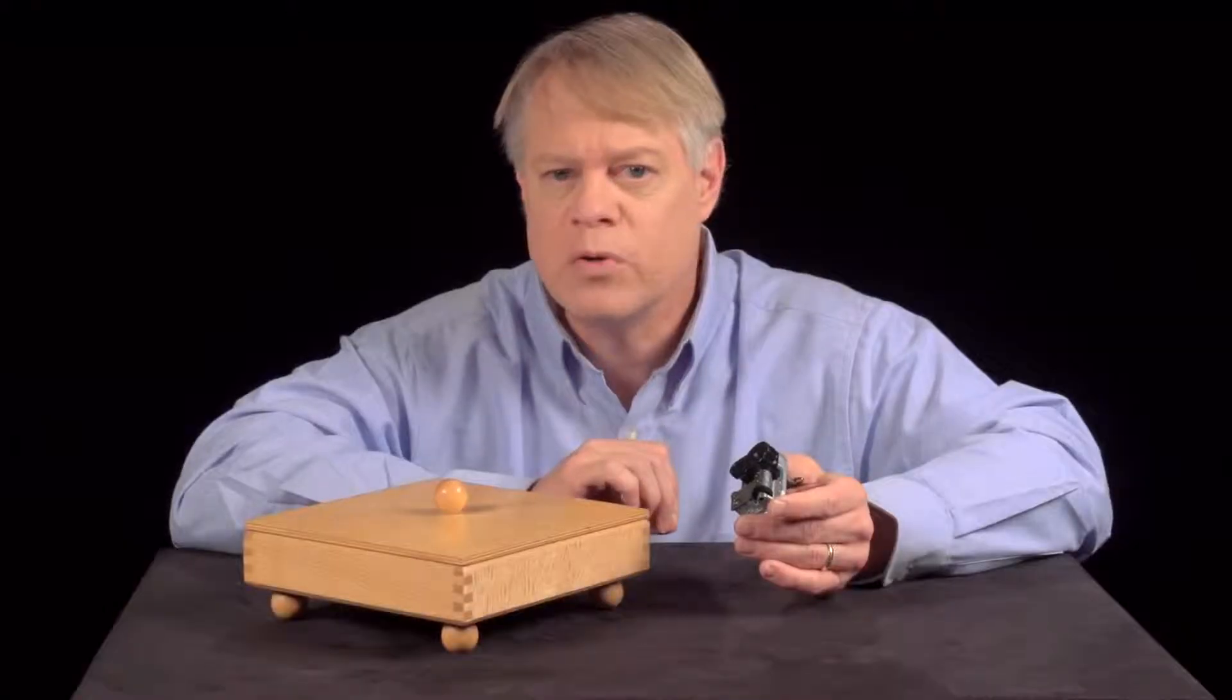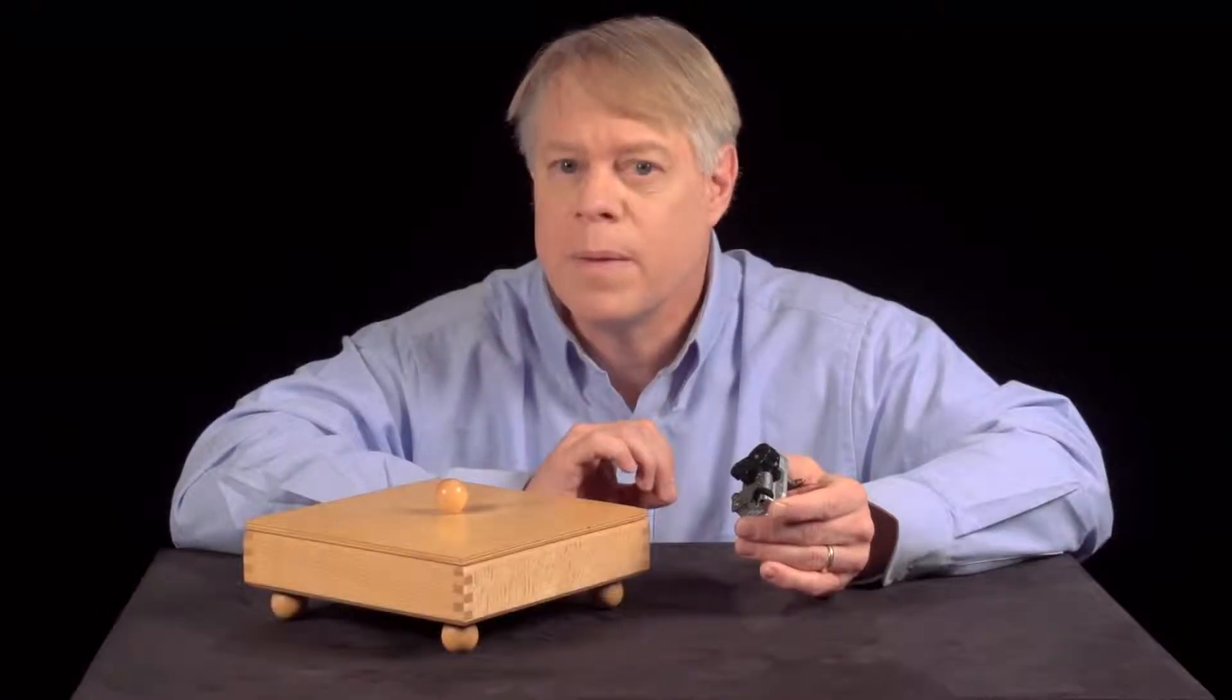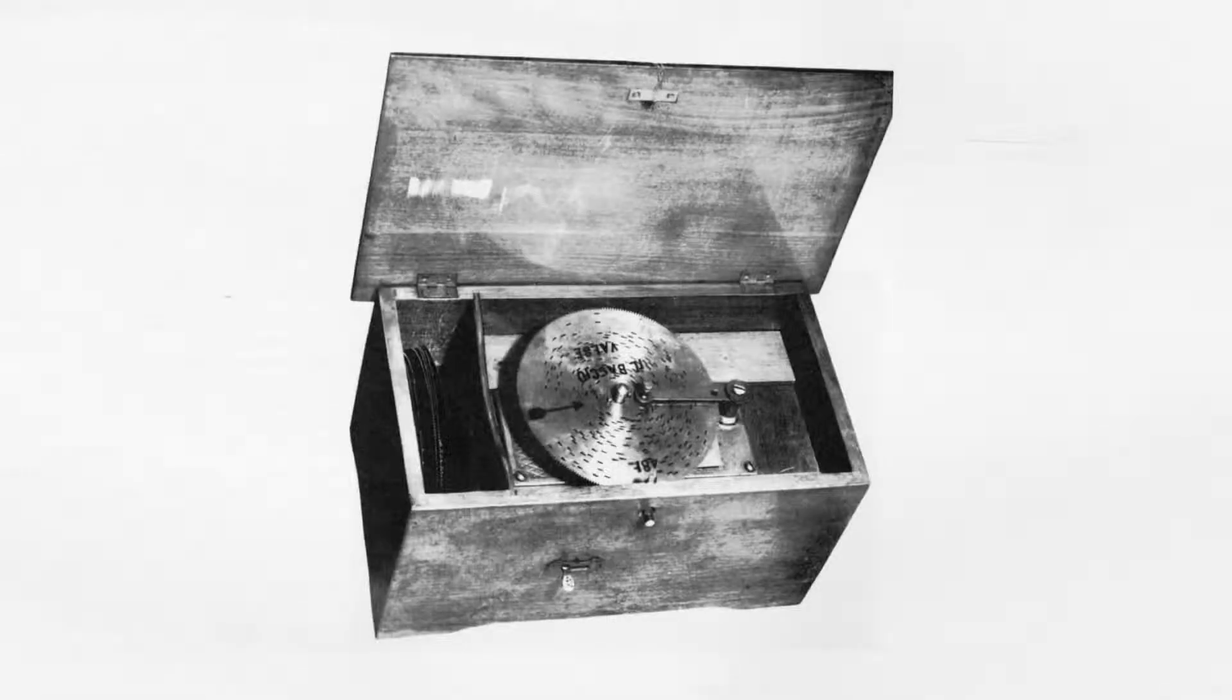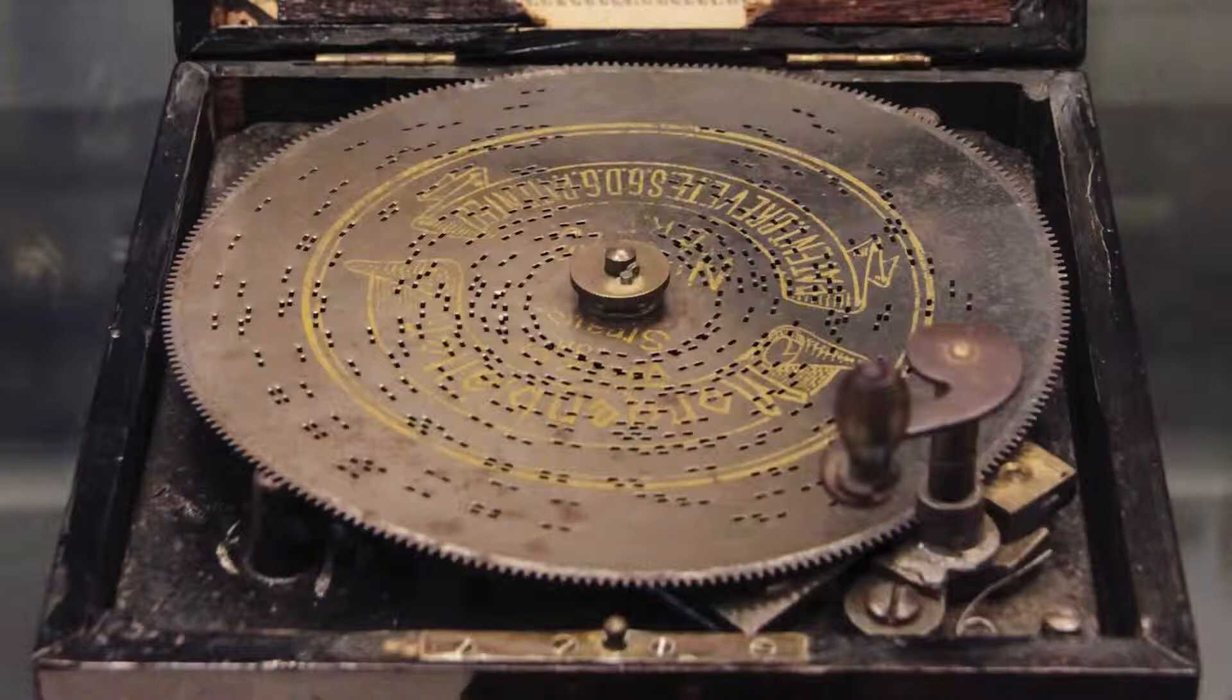The first music boxes used cylinders, but were superseded by boxes that used discs which could be easily changed. Here, the melodies were punched into a metal disc. With this innovation, music boxes shrunk and their cost declined.